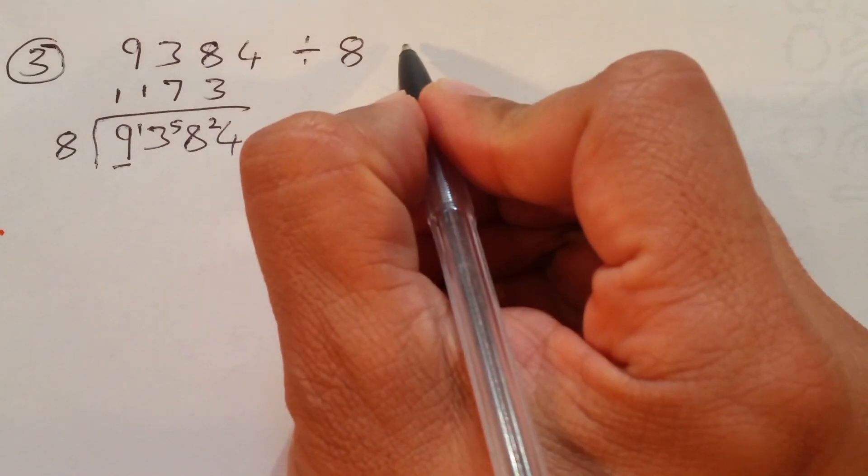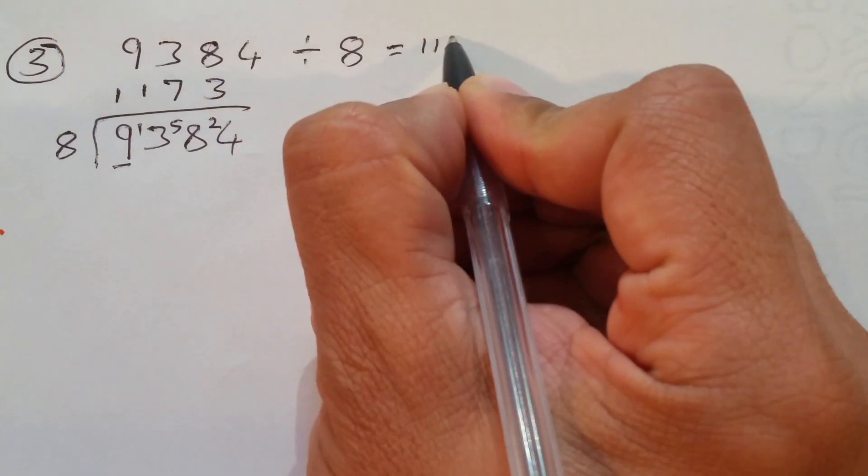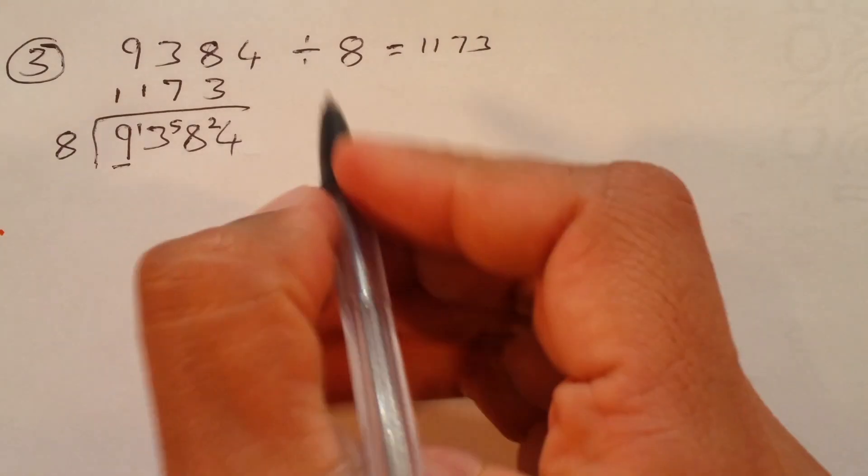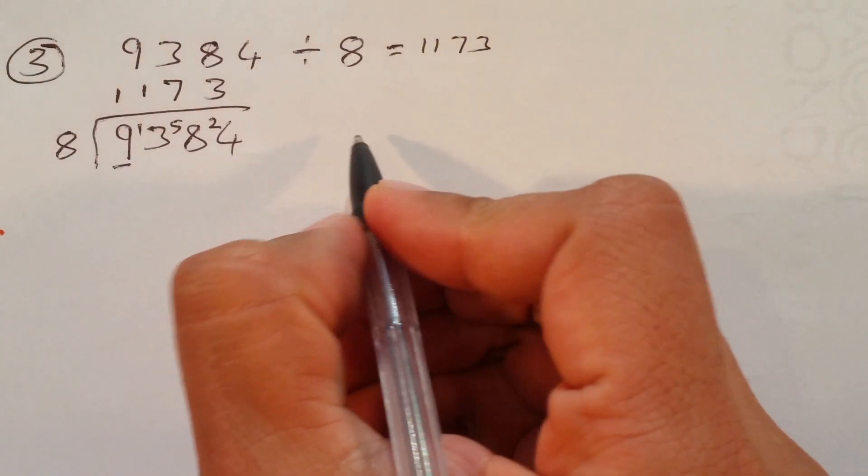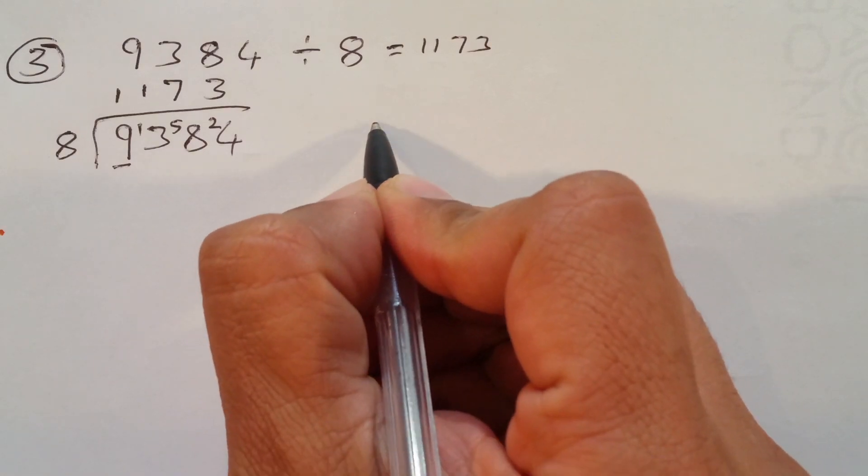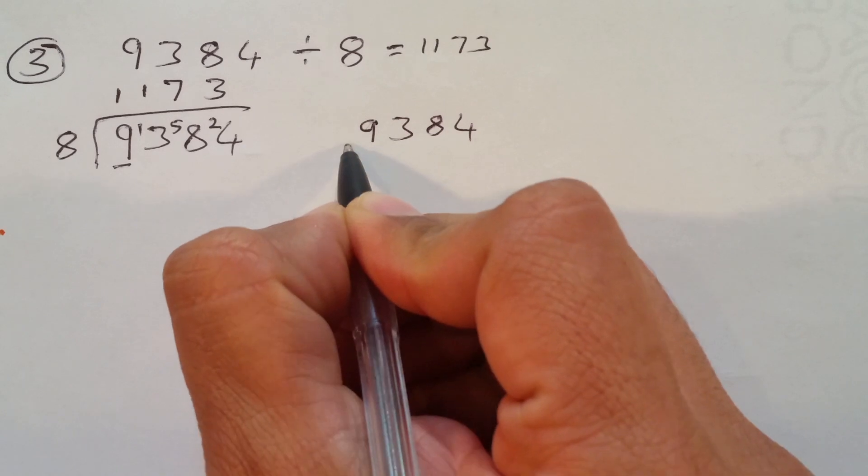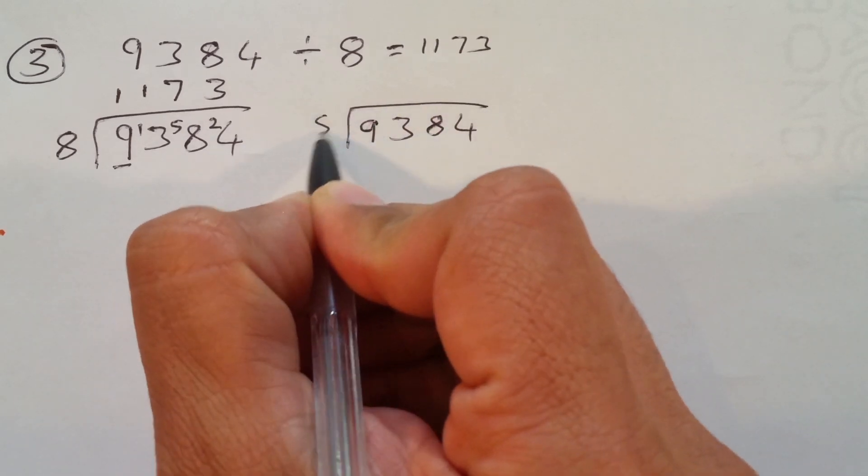So, our answer is 1, 1, 7, 3. I'm going to do the same thing with the long division method now. Exactly same thing, nothing different, which is 9, 3, 8, 4, divided by 8.